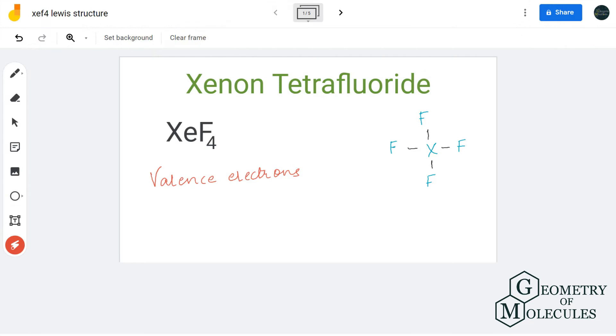Hi guys, let's learn about the Lewis structure of xenon tetrafluoride, XeF4. First, we have to know the total number of valence electrons for xenon tetrafluoride. To know that, let's add the number of valence electrons for both xenon and fluoride.